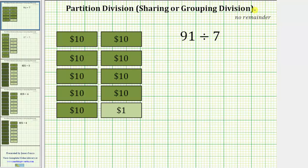We will consider the quotient 91 divided by seven. We will view this quotient as $91 divided by seven to better understand the process.